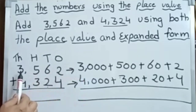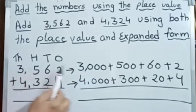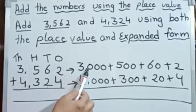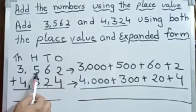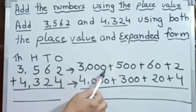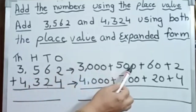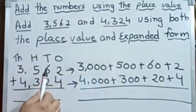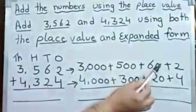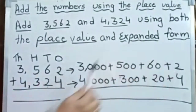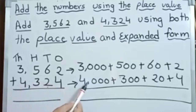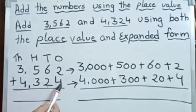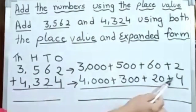As you have seen in my previous video, expanded form means 3 is in the thousands place. So after 3, how many zeros in 1,000? Three zeros — and there are 3 digits after 3, so 3,000. Now 500, then 6 in the tens means 60, plus 2. Now 4,000, plus 300, plus 20, plus 4.